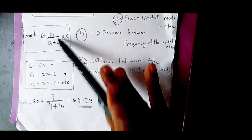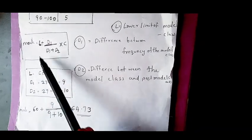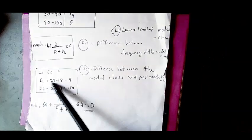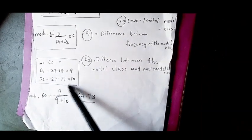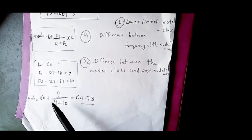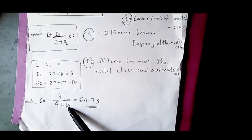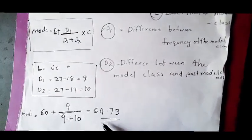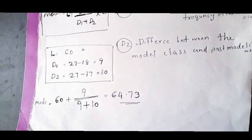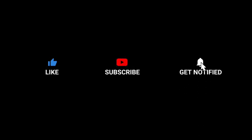The lower limit L is 60. D1 equals a certain value, and the lower limit gives 90. Then d2 is 10, giving lower limits of 90 and 70 respectively. That gives a result of approximately 3. Do not forget to like, share, and subscribe.